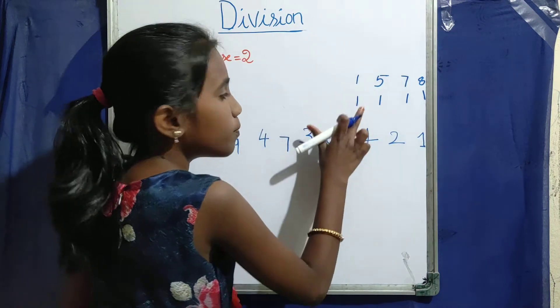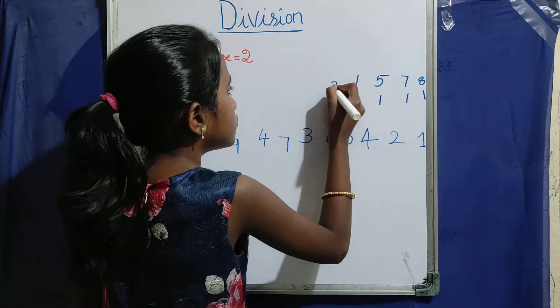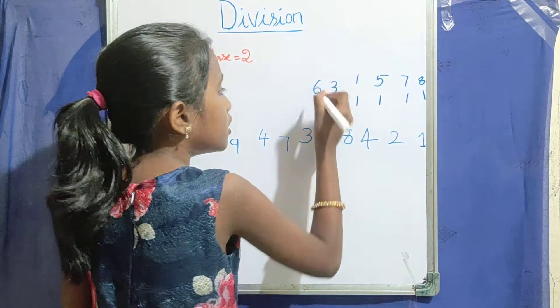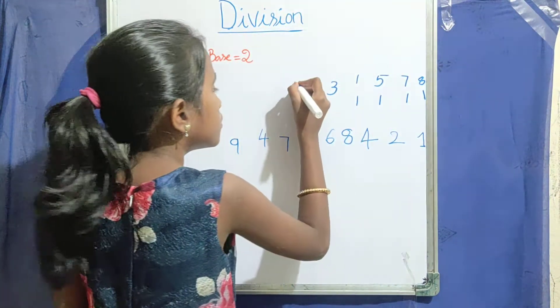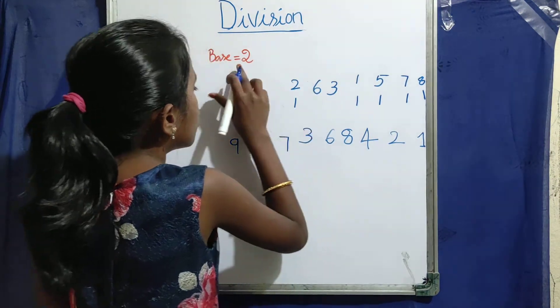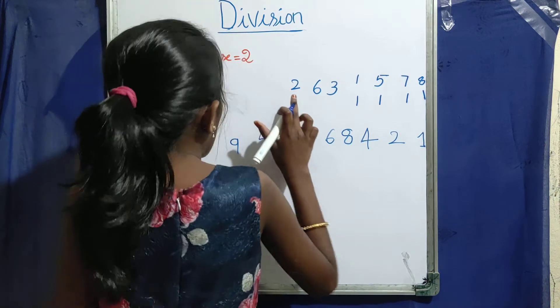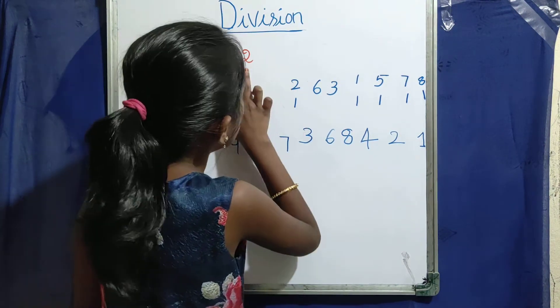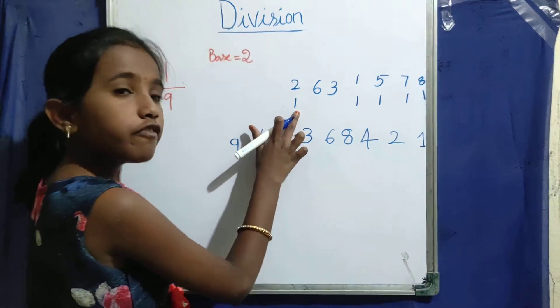2 ones, 2. Plus 1, 3. 3 twos, 6. 6 twos, 12. 2, 2, 2, 4. Plus 1, 5.